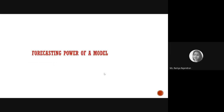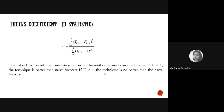Now, how can you measure the forecasting power of a model? This is done using a value called the U statistic, otherwise known as Theil's coefficient. It is used to find out the forecasting power of a model. If the U value is less than one, your technique is better than a naive forecast. If the U value is greater than one, your technique is not better and you should consider dropping it.